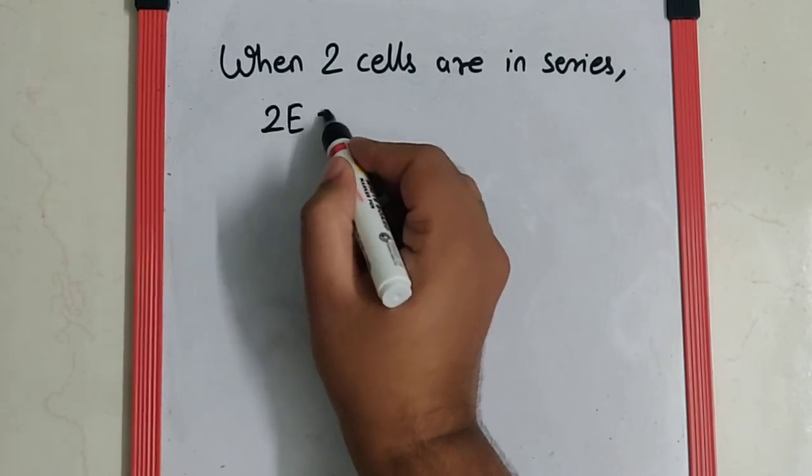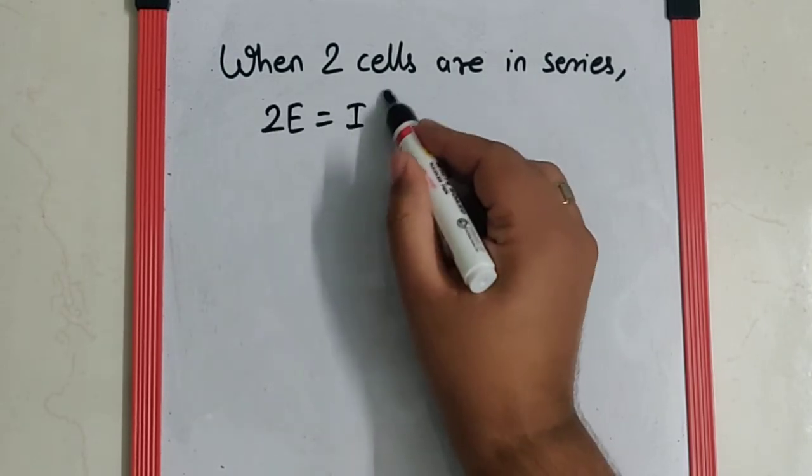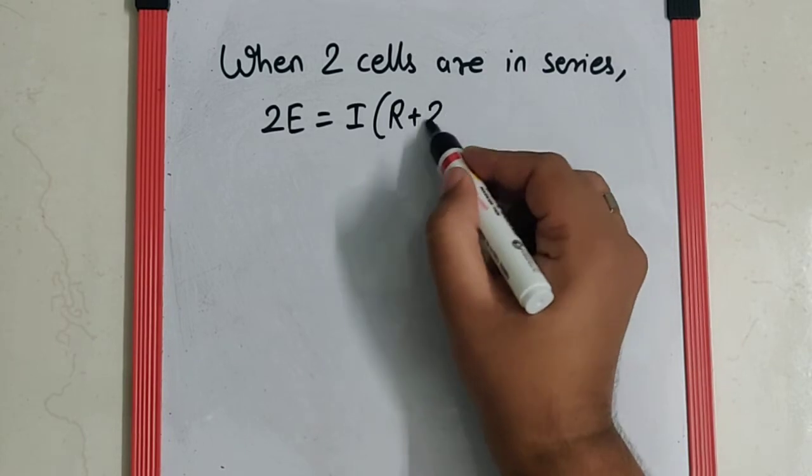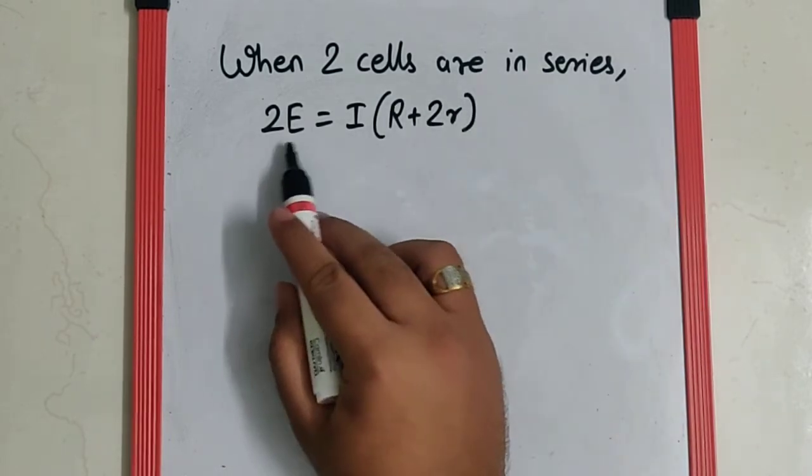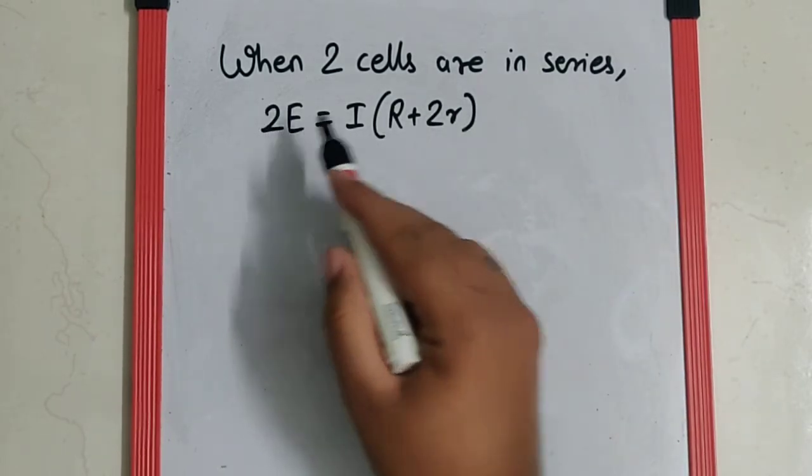The equation is 2E equals I bracket R plus 2r because the two cells in series get added up. Even the internal resistance gets added up.